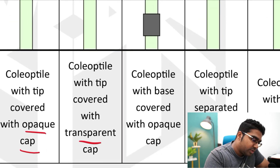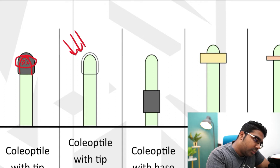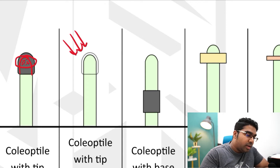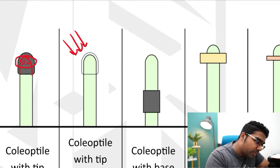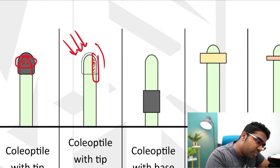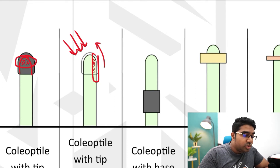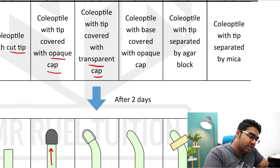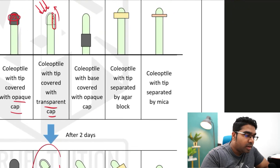What happens when we have a transparent cap? Light can go through the transparent cap, so the same thing happens as normal — auxin runs away from the light to the other side, causing a higher rate of cell elongation on the shaded side, and therefore the coleoptile tip bends towards the light.